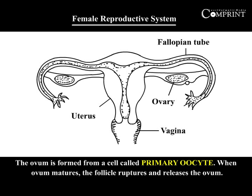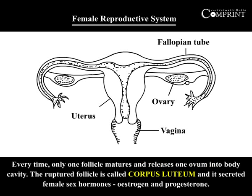The ovum is formed from a cell called a primary oocyte. When the ovum matures, the follicle ruptures and releases the ovum. Every time, only one follicle matures and releases one ovum into the body cavity.